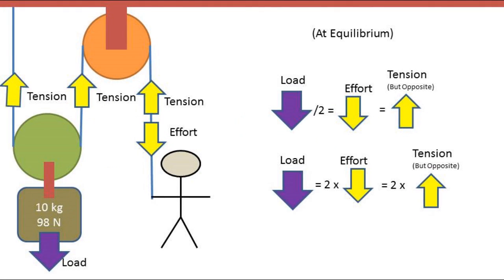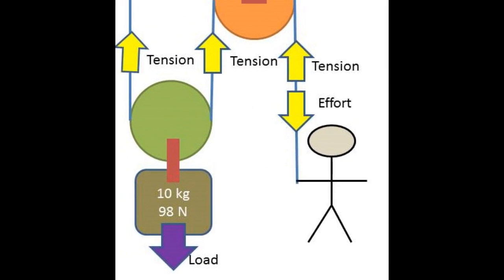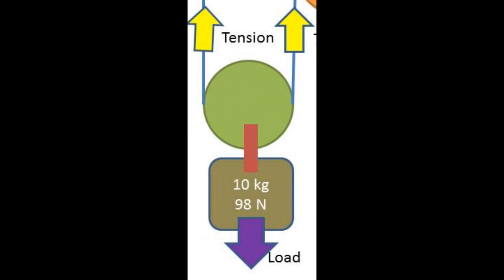Now let's take a look at a two pulley system. If we zoom into the section that is past the first pulley, we see that two tension forces cancel out the load weight. So each tension accounts for half of the load weight.